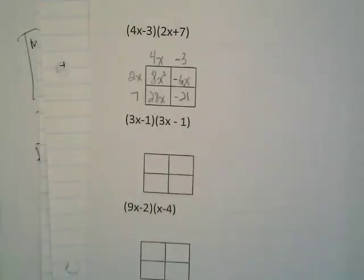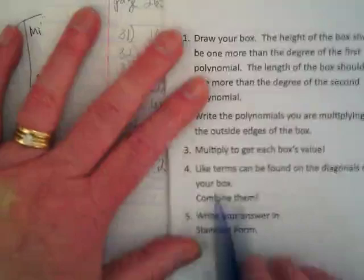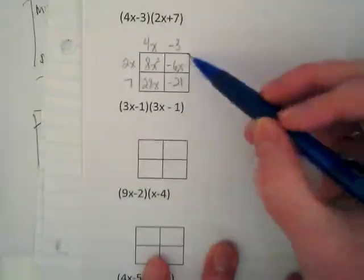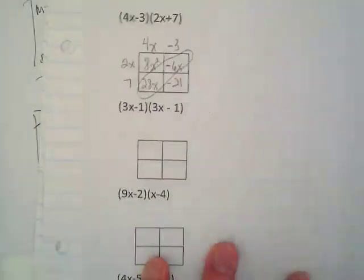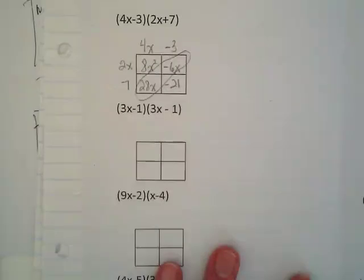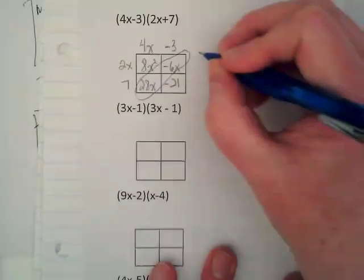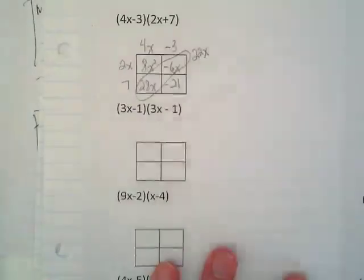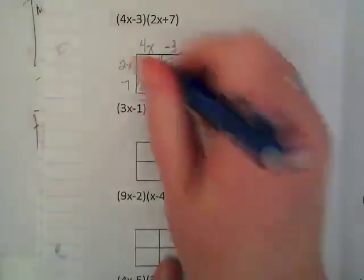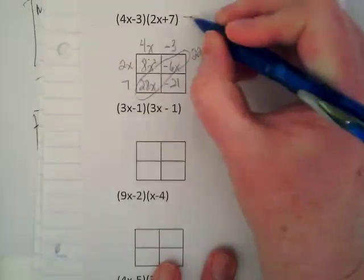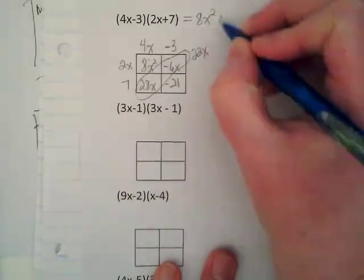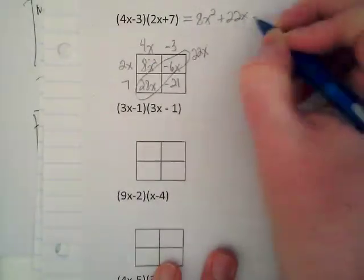Now, on the directions on the outside, when it said combine like terms, like terms can be found on the diagonals. Do you see where the like terms are here? 28x and -6x are like terms. When I combine them, what do they turn into? When I find like terms in the diagonal, I do circle them, and on the outside of the circle, I write what I got, because now I'm going to take this term and this term and this term, and they are my answer. So my answer is 8x² + 22x - 21.